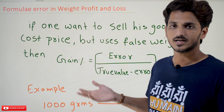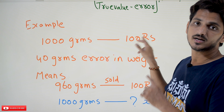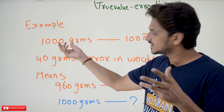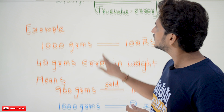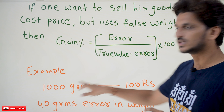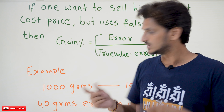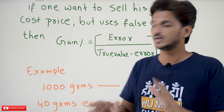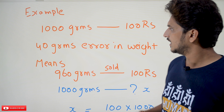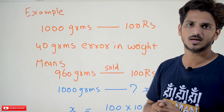Let's take an example. Assume that 1000 grams of sugar is selling at 100 rupees. We are taking 1000 grams for 100 rupees because when identifying gain percentage, whatever values you choose, you will get the same gain percentage — the percentage won't get affected by the values chosen. We chose these values for simplification.